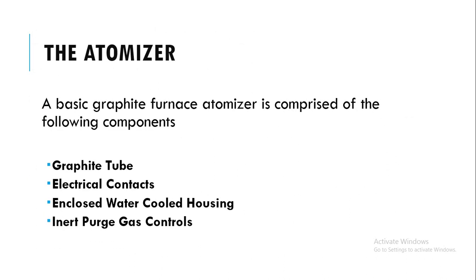A basic graphite furnace atomizer is comprised of the following components: a graphite tube, electrical contacts, an enclosed water-cooled housing, and inert purge gas controls.